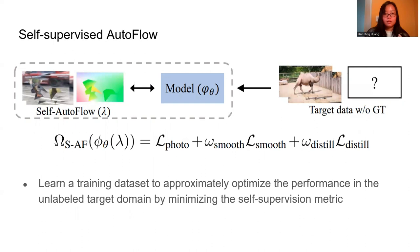We extend Autoflow to Self-Supervised Autoflow and define our search metric using three terms: photometric loss, smoothness loss, and distillation loss.